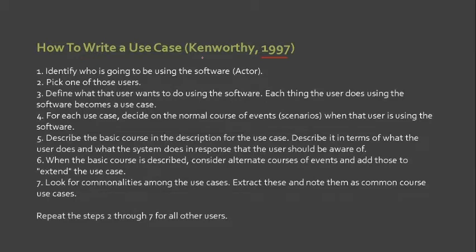Ken Worthy created a list of steps on how to write a use case. First, identify who is going to be using the software — those are the actors. Next, pick one of those users. After picking, define what the user wants to do using the software. Each thing the user does using the software becomes a use case — basically those are the scenarios or the features needed for the system.